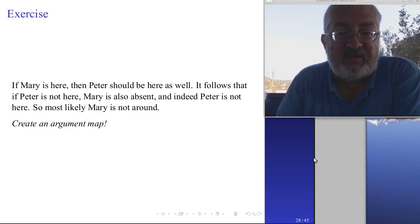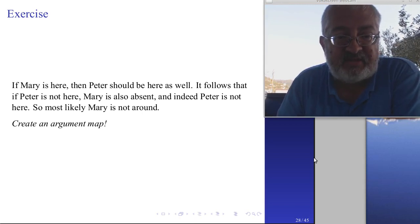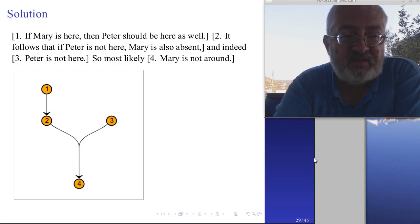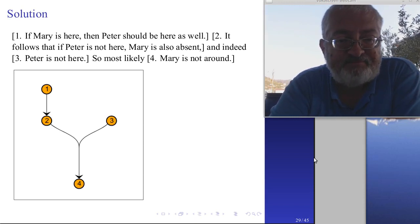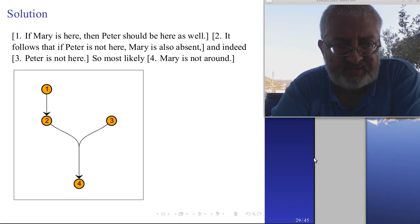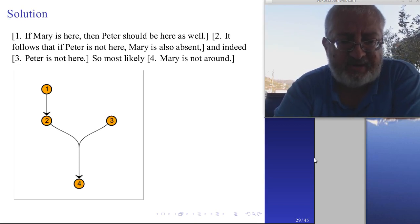Another exercise: 'If Mary is here, then Peter should be here as well. It follows that if Peter is not here, Mary is also absent. And indeed, Peter is not here, so most likely Mary is not around.' Create an argument map for that. You get an argument map that should be obvious from looking at it — where it comes from and why it looks the way it does. These are very easy examples.